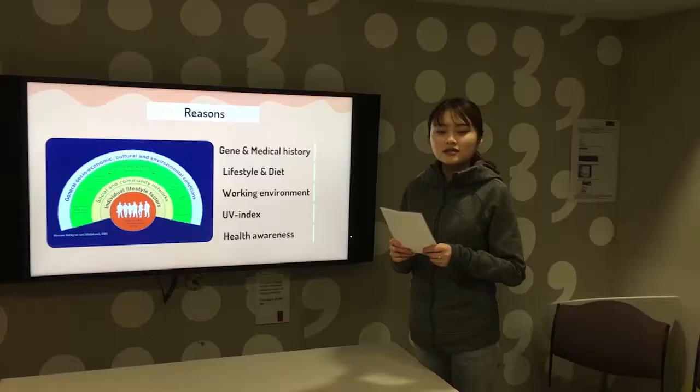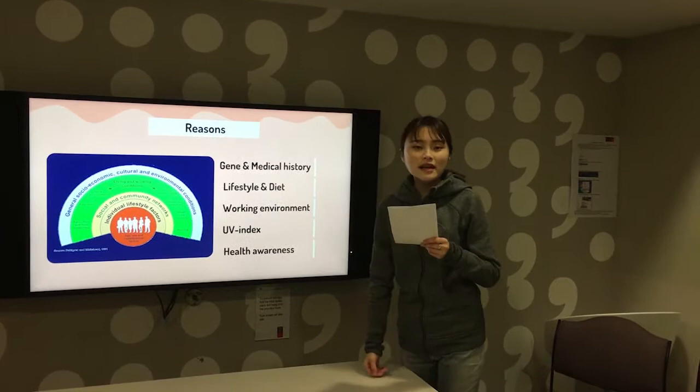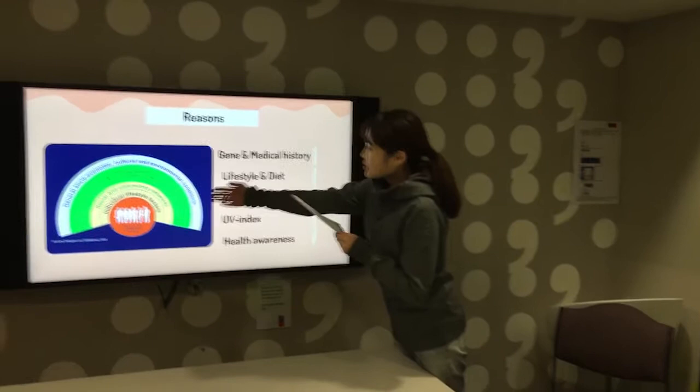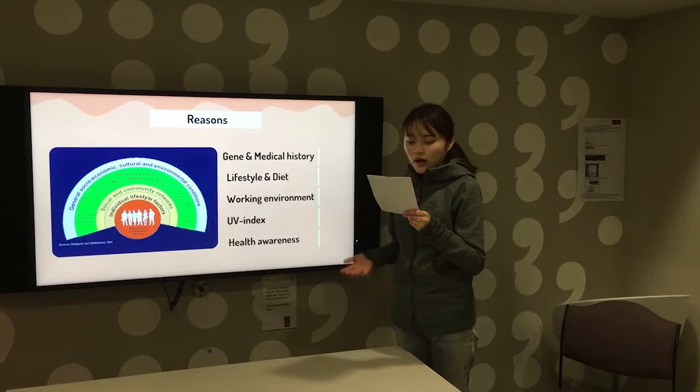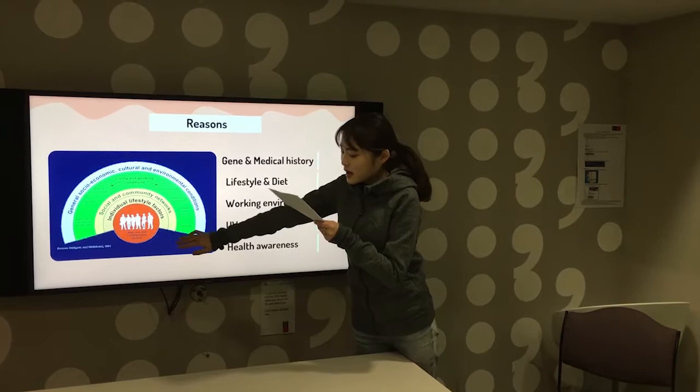Next, I will use the rainbow model to explain the causes of skin cancer. This model will explain the relationship between individuals, environment, and diseases. As can be seen in the pictures, individuals are in the core and surrounding them are the factors which influence the health of people and can be modified. In the core part, the determinant is gene.